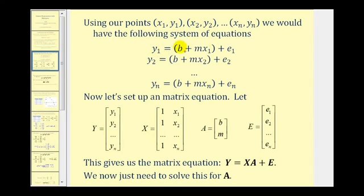Every given point would create a linear equation in the form of y sub n, the given y value, must equal b plus m times x sub n plus e sub n, where b is the y-intercept, m is the slope, x is the given x value, and e is the small error from using the regression line to predict the true y value. Each point creates a linear equation, and together we have a system of equations, which we can write as a matrix equation.